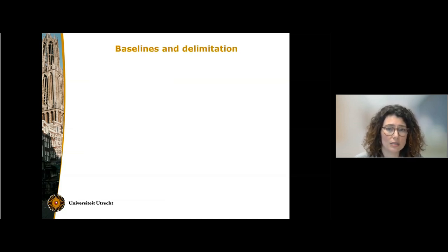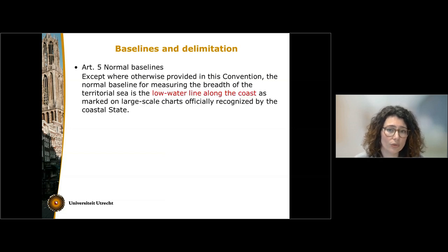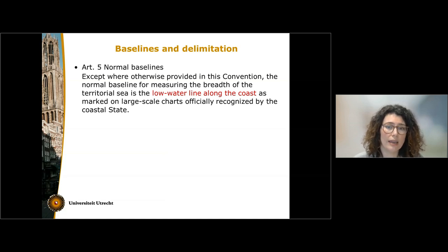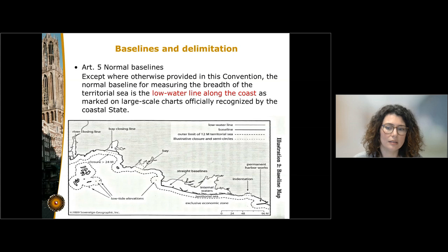Let's see first how states can determine the different maritime zones. In order to do so, they have to first determine the baselines. On the basis of Article 5 of the Law of the Sea Convention, states can use the normal baseline system if they have a quite linear coast, and this normal system follows the low water line along the coast. Here you see a map with an example of a quite linear coast and how the state can determine the baseline.